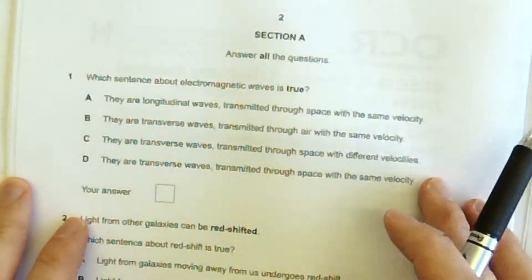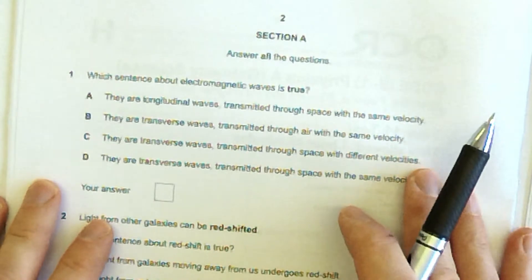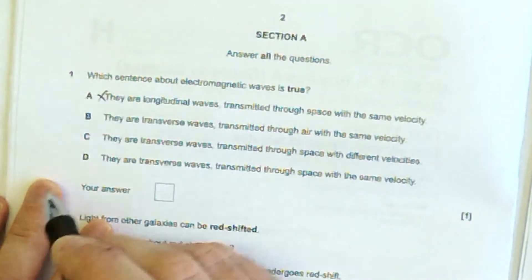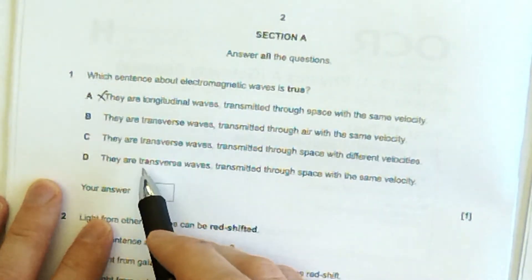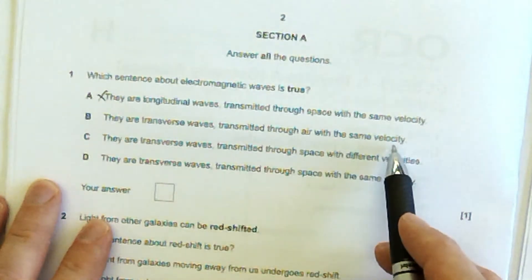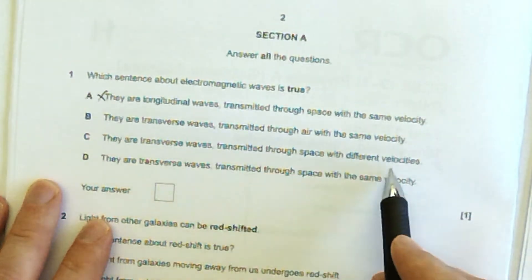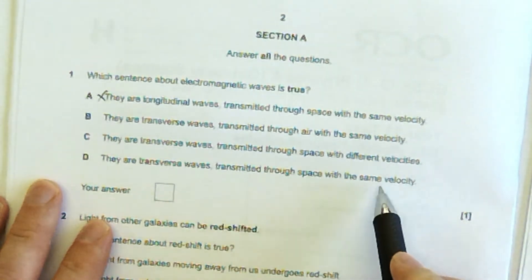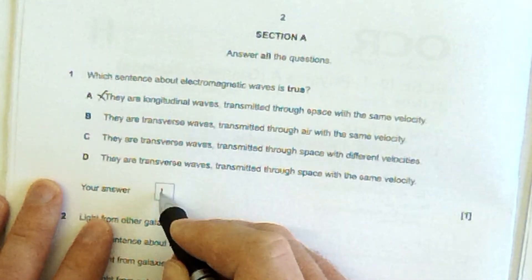Now, which sentence about the electromagnetic waves is true? Well, they're not longitudinal waves, so it can't be that one. They are transverse waves, so it's got to be one of these three. Transmitted through air with the same velocity, transmitted through space with different velocities, transmitted through space with the same velocity, the answer is D.